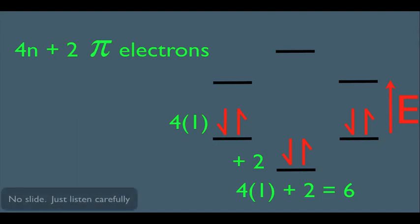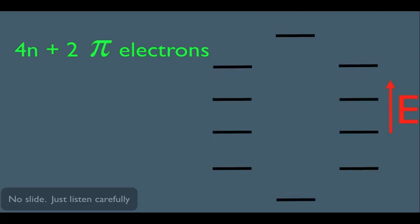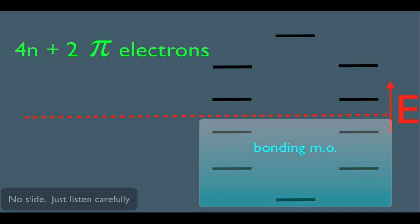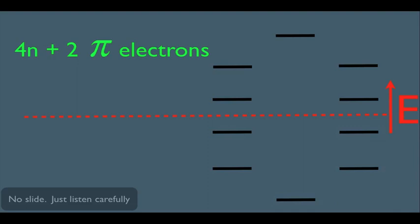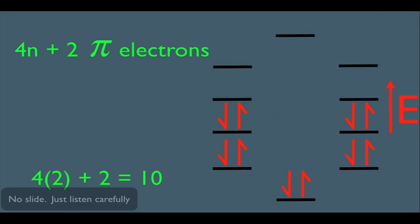Here's another way to understand the 4n+2 electron rule. Say you have a molecule with this kind of molecular orbital description, and this is the midline, making these the bonding molecular orbitals. Using the 4n+2 rule, this part would be the 4n and this part would be the plus 2. In this case, n could equal 2, so there would be 4 times 2 electrons — two sets of 4 — plus the plus 2 electrons here. Notice all of these electrons are in bonding molecular orbitals. Using n equals 2, 4 times 2 plus 2 equals 10, and that's exactly how many electrons we have.